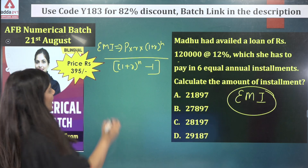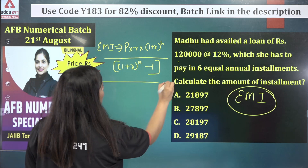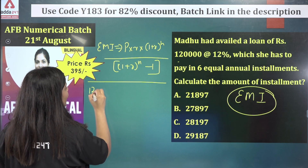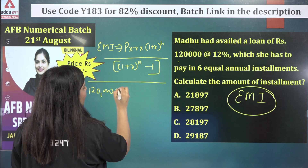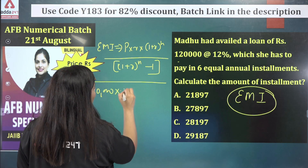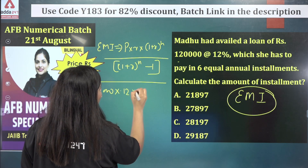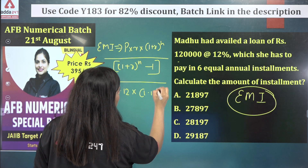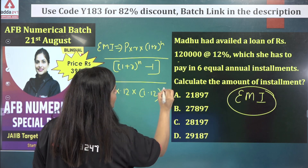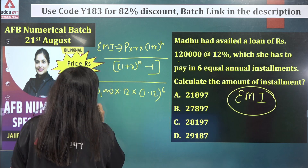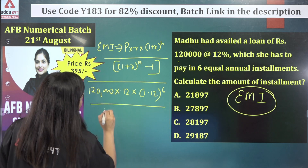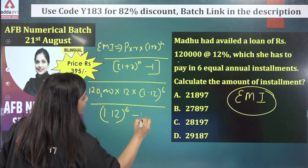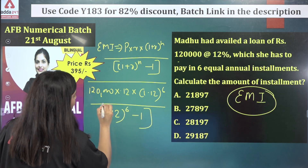I hope this is visible. Now we will put values in this. Principal is 1,20,000. Rate is 0.12. So it becomes: 1,20,000 × 0.12 × 1.12^6 divided by (1.12^6 minus 1). This is our whole equation.